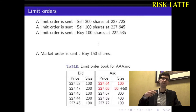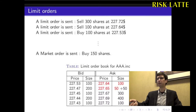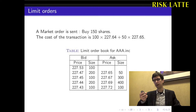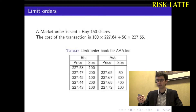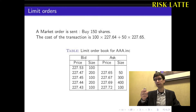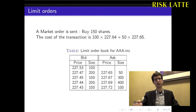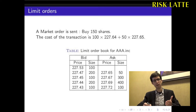The 50 remaining shares used to complete the trade are going to be at $227.65. So in the end, the cost of the transaction for buying 150 shares is going to be 100 times $227.64 plus 50 times $227.65. We see that the size of the trade has an influence on the price per share.